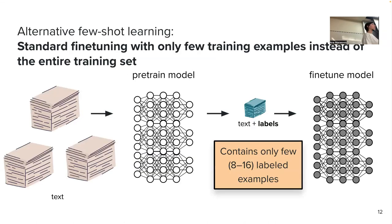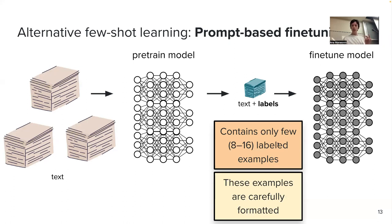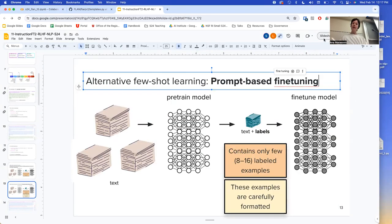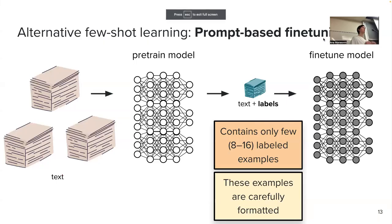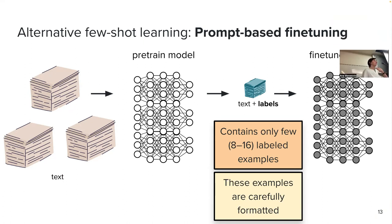You could do few-shot learning by doing your standard fine-tuning but using only a few examples — that will still be few-shot learning. If you crafted your examples in a prompt-like way, you would call that prompt-based fine-tuning, also known today as instruction fine-tuning. I don't recommend calling it instruction fine-tuning though, because instruction fine-tuning has really been done on a large scale during pre-training. You can call this prompt-based fine-tuning — and this would still be few-shot learning.